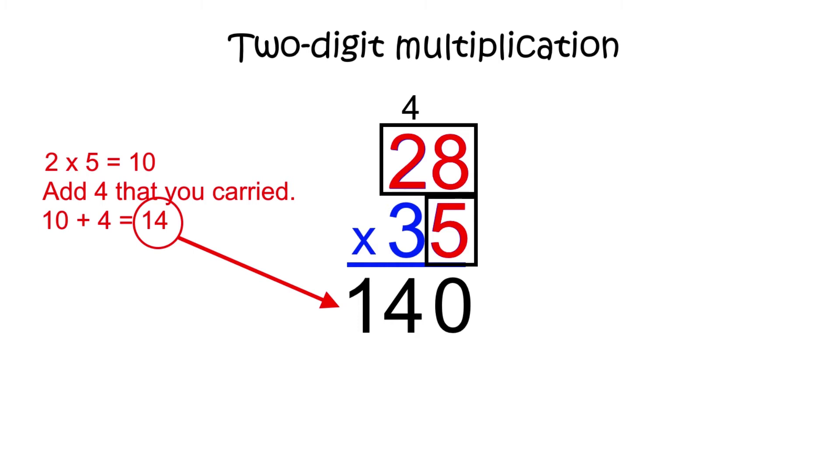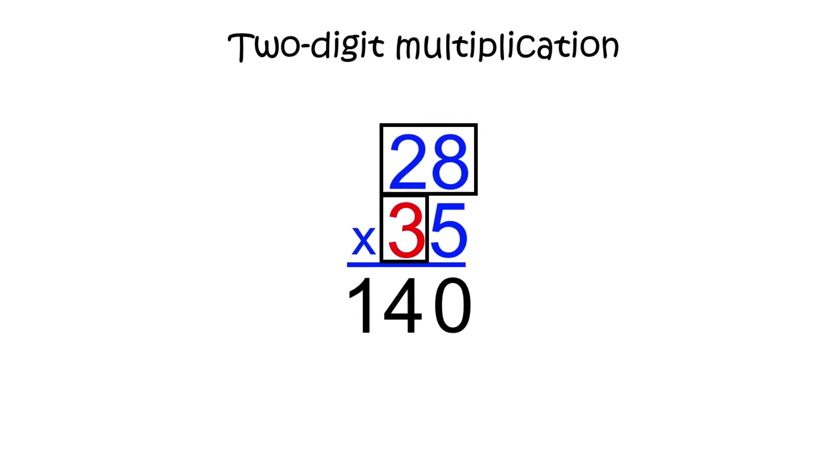Now, we need to take the 28 from the top row and multiply it by the 3 in the bottom row. We'll write our answer here because we are in the second stage of the problem. Since the 3 in 35 is in the tens place, it has a value of 30. To show that we're multiplying tens, we need to put a 0 here.